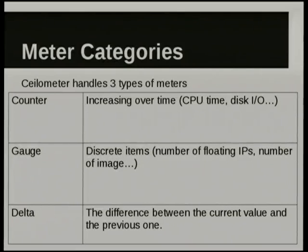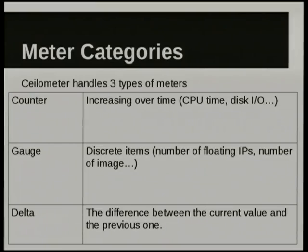The actual meter types are counters — this is very consistent with other statistics-gathering tools. Counts increase over time, like CPU time or my age — it keeps getting bigger. Gauge is some discrete value, like how deep is the swimming pool. And a delta is what's the difference between now and the previous time.